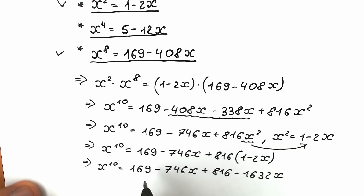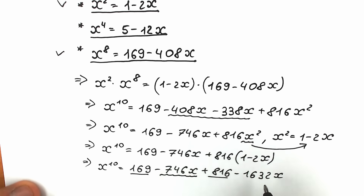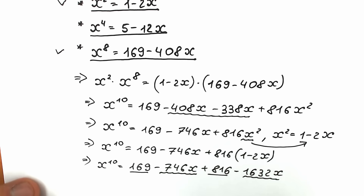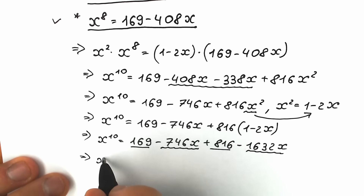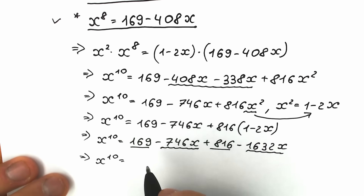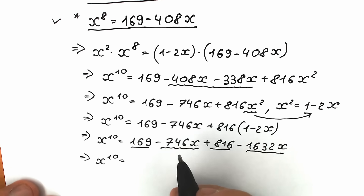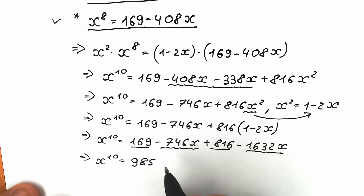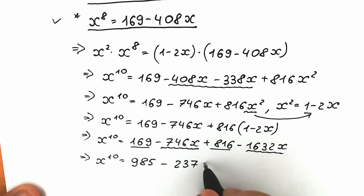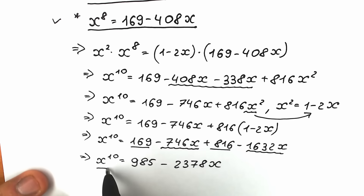Applying the same trick once more: x squared equals 1 minus 2x. So we plug in 1 minus 2x instead of x squared. x to the tenth power equals 169 minus 746x plus 816 times (1 minus 2x), which gives 169 minus 746x plus 816 minus 1632x.